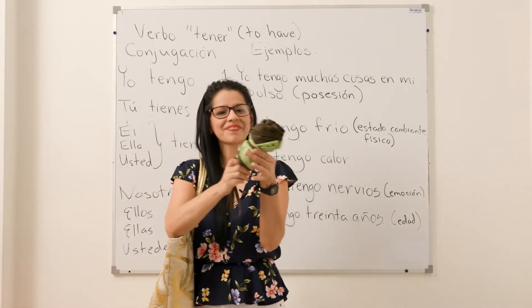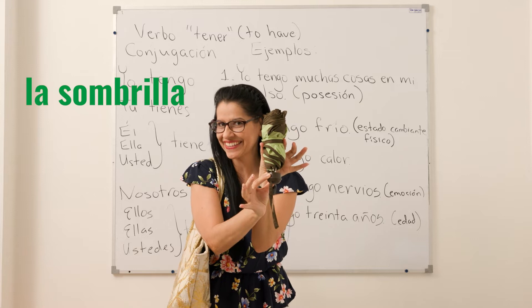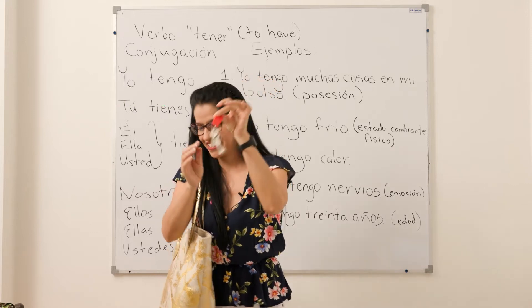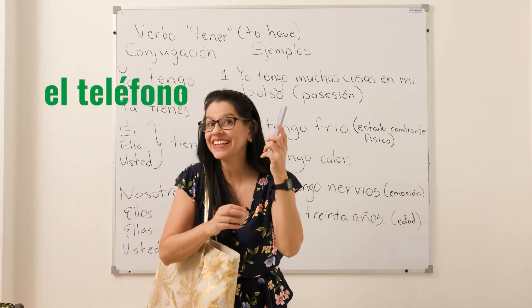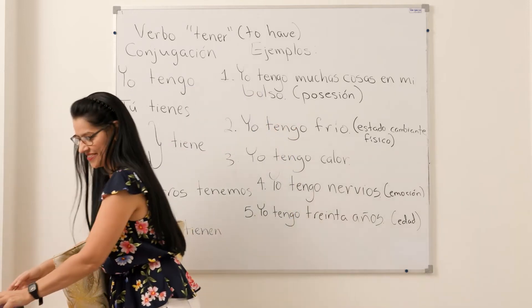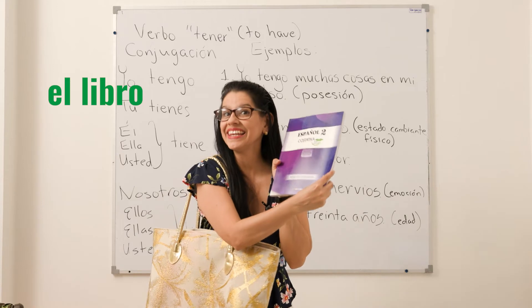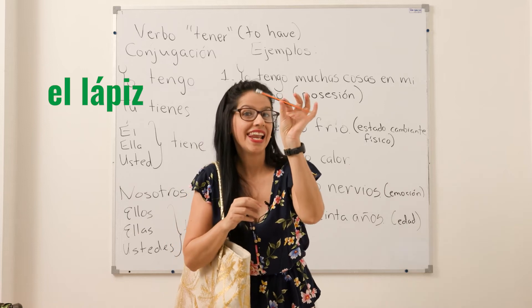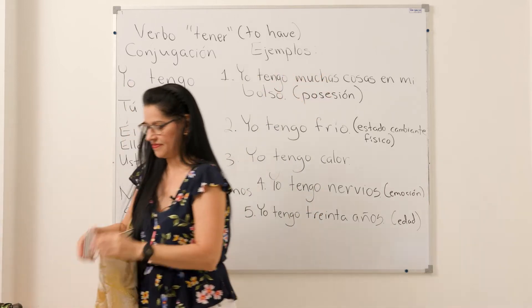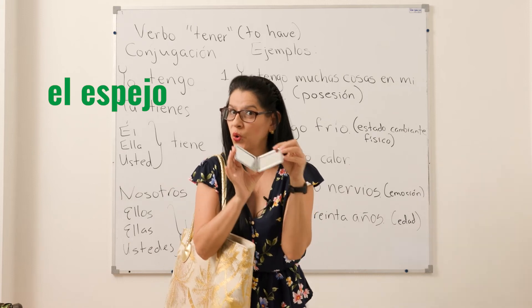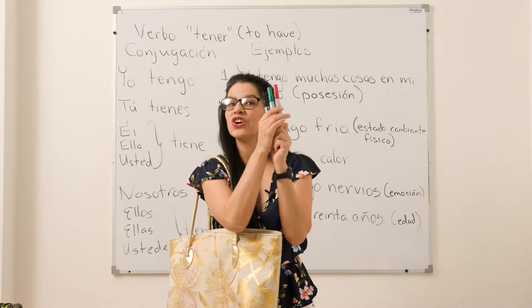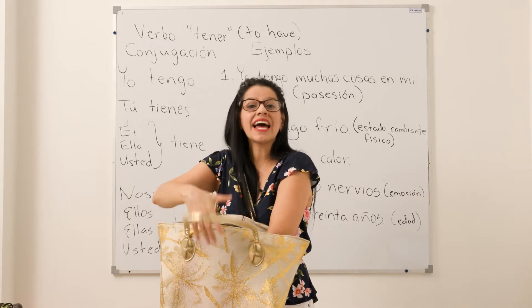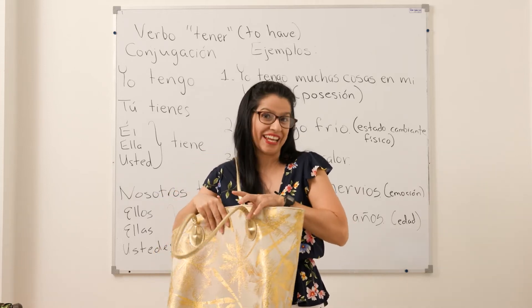Vamos a repetir: la sombrilla, las llaves, el teléfono, el libro, el lápiz, el espejo, los marcadores. Yo tengo — expresa posesión. Yo tengo.